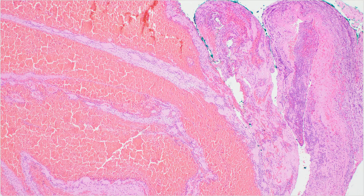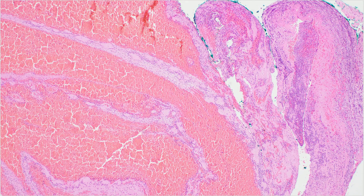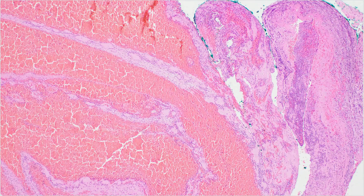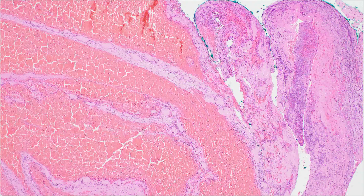Today we're going to be talking about hematomas and hemorrhages in the brain and we're going to be looking at this microscopically. I have a few other videos talking about hematomas and hemorrhages macroscopically, but here we're going to be looking at the microscopic appearance of hematomas and hemorrhages.